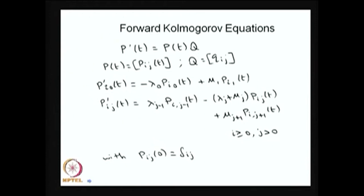We are discussing the forward Kolmogorov equation for a special case of continuous time Markov chain, that is a birth-death process. For a birth-death process, the Q matrix is a tri-diagonal matrix. Therefore, from the forward Kolmogorov equation you will have only two terms on the right-hand side for the first equation, and only three terms — the diagonal element and two off-diagonal elements — for all other equations.